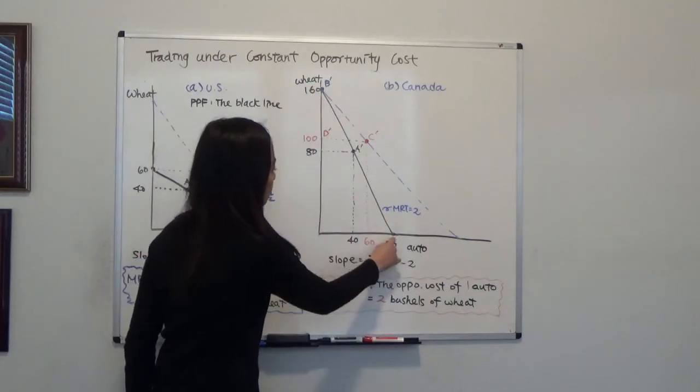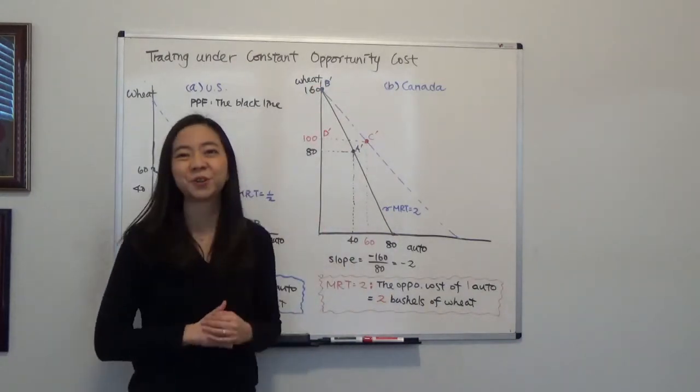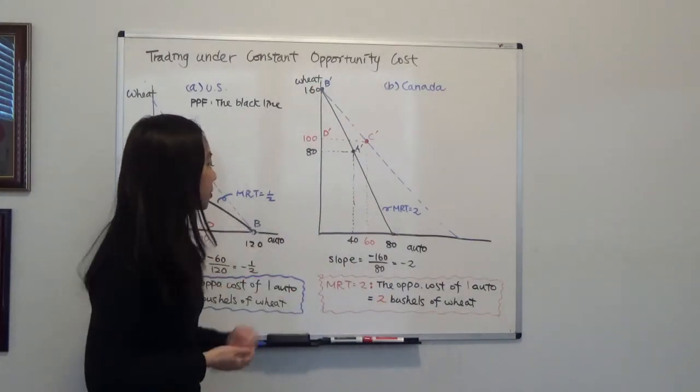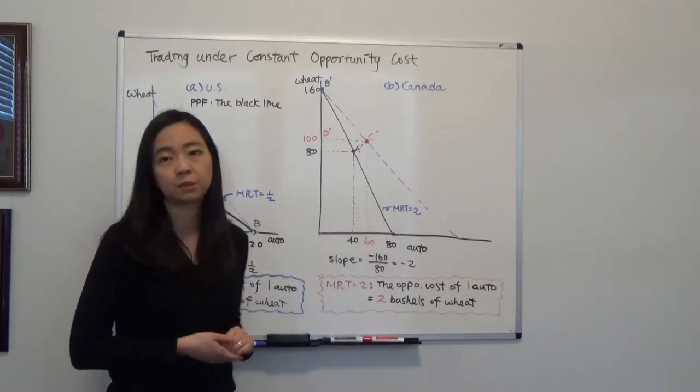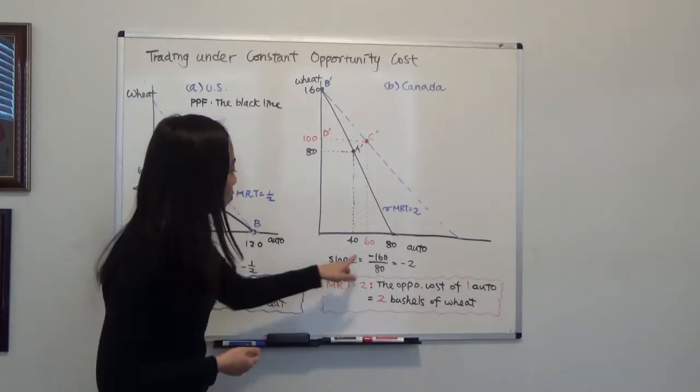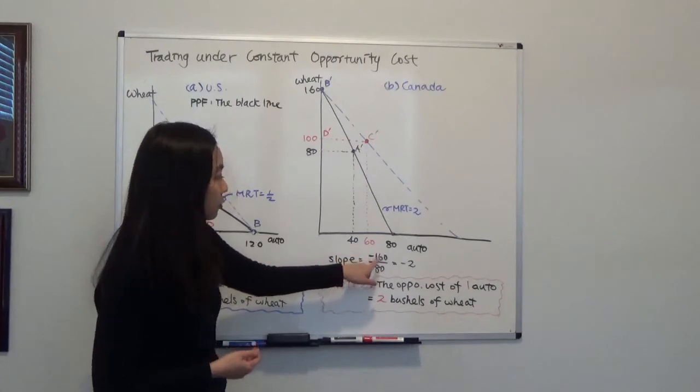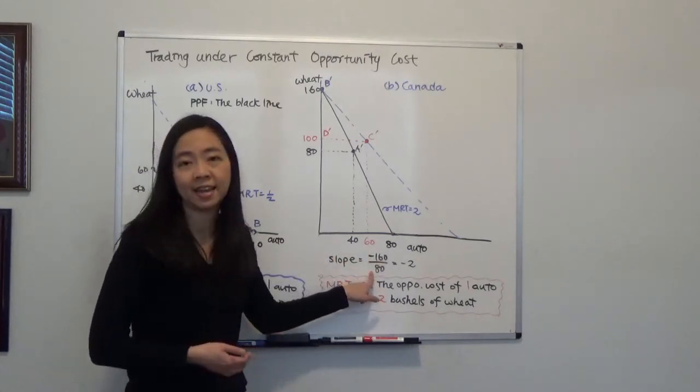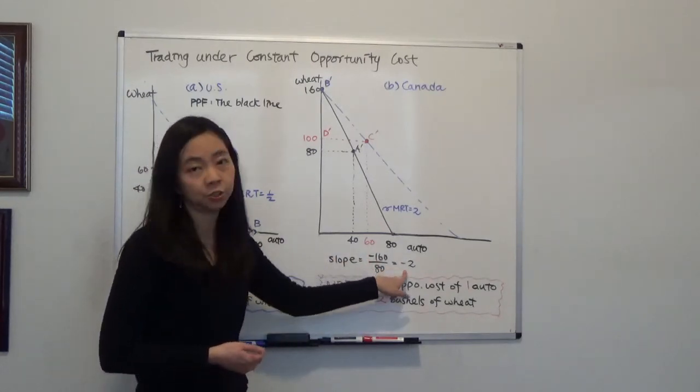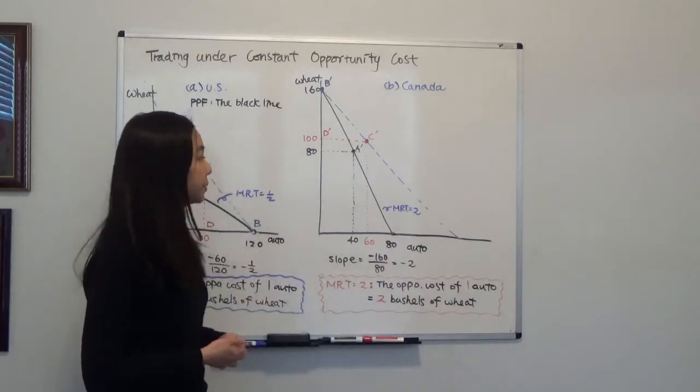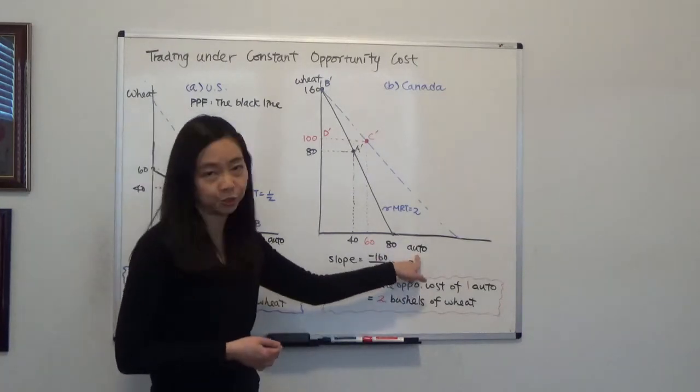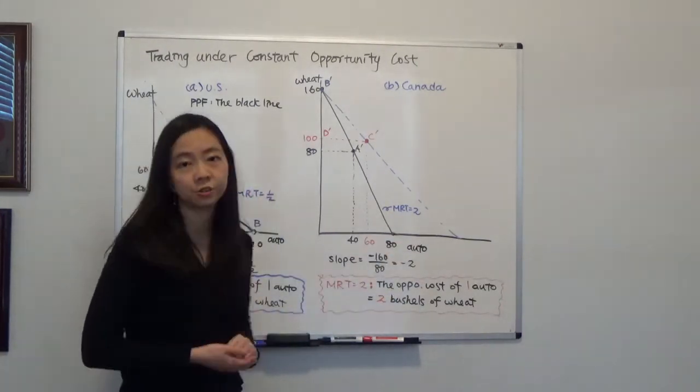So you connect the two points, you get the production possibility curve. Again, we can calculate the slope of this production possibility curve. Then that's negative 160 divided by 80, and that gives you negative 2. That tells you the opportunity cost of one auto is two bushels of wheat.